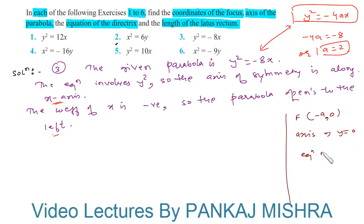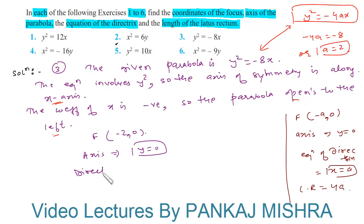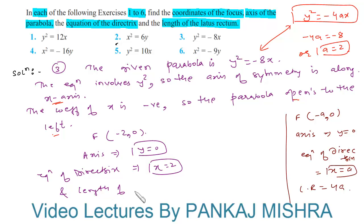The equation of the directrix is x = a, and the length of the latus rectum is 4a. Therefore, the focus is at (−2, 0), the axis is y = 0, the equation of the directrix is x = 2, and the length of the latus rectum is 4 × 2 = 8. This completes our solution.